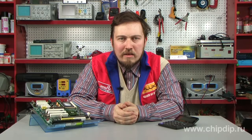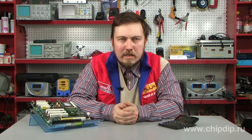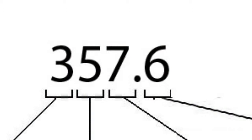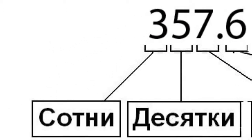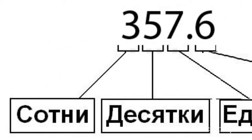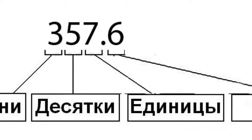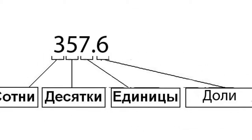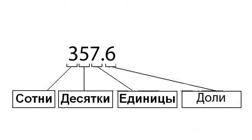In positional number systems, the same numeric character or figure in a number's writing designation has different meanings depending on its location or digit position. This system includes the modern decimal system, the origin of which is associated with counting on fingers. For example, in the number 357.6, the first symbol 3 means 300, the second symbol 5 means 50, the third symbol 7 means 7 units, and the fourth symbol 6 means 6 tenths of a unit.